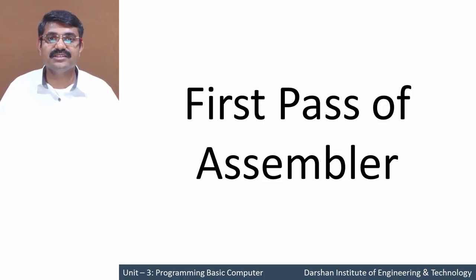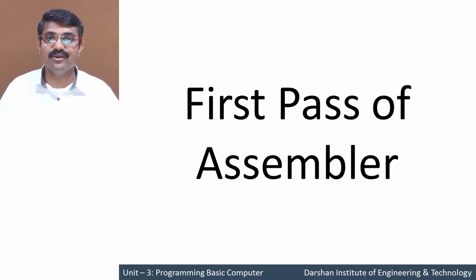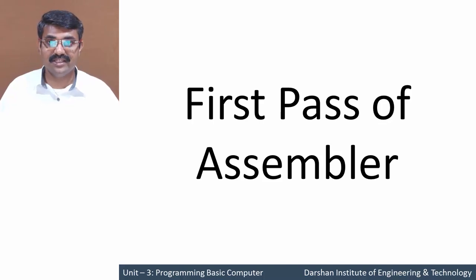In this session we'll discuss the first pass of an assembler. During the translation process from assembly language code to binary language code, it passes through two phases called passes of an assembler. During the first pass, only one operation is carried out: the symbols used in our assembly language program are stored into the symbol table along with their location.